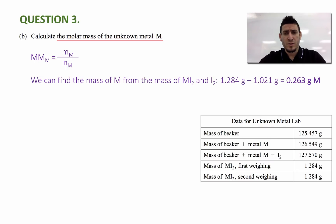To find the mass of the metal M, I can use the law of conservation of mass. And I can say the mass of M should be equal to the mass of the compound MI2 minus the mass of I2, which I calculated in the previous part. The mass of MI2, I can find it from the table, it's equal to 1.284 grams minus the mass of iodine, which is calculated in the part A. So the mass of M is equal to 0.263 grams.